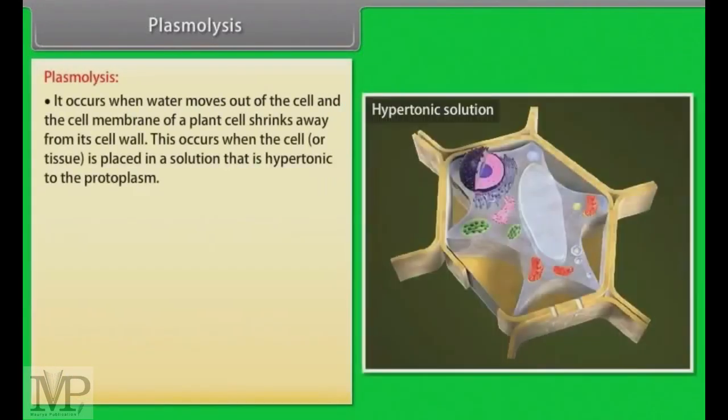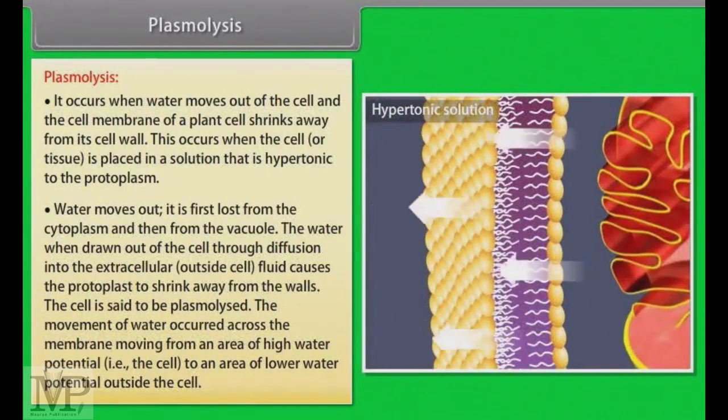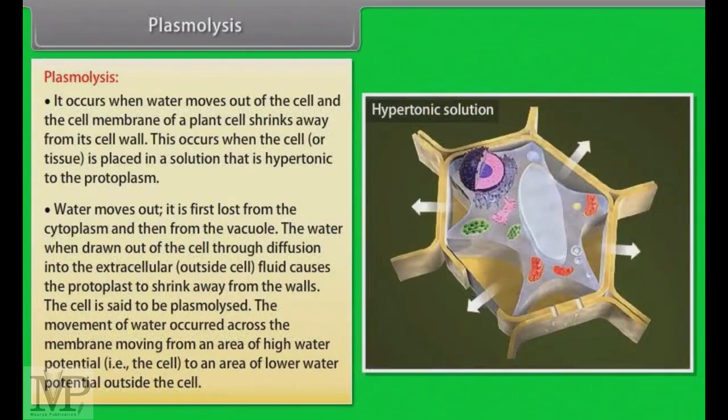Plasmolysis occurs when water moves out of the cell and the cell membrane of a plant cell shrinks away from its cell wall. This occurs when the cell or tissue is placed in a solution that is hypertonic, has more solutes, to the protoplasm. Water moves out. It is first lost from the cytoplasm and then from the vacuole. The water when drawn out of the cell through diffusion into the extracellular fluid causes the protoplast to shrink away from the walls. The cell is said to be plasmolyzed. The movement of water occurs across the membrane moving from an area of high water potential to an area of low water potential outside the cell.